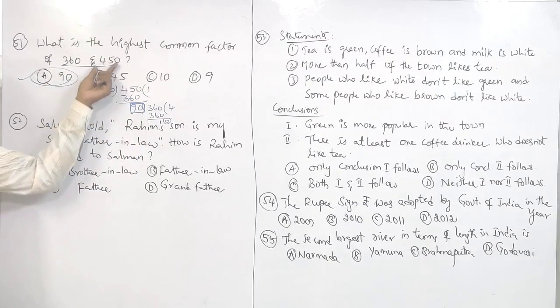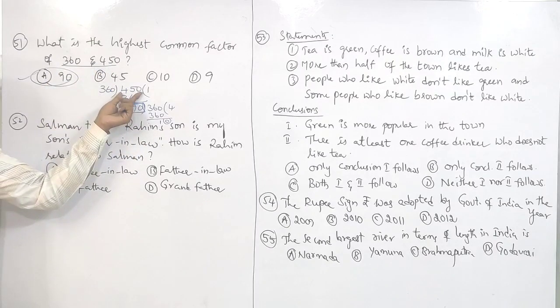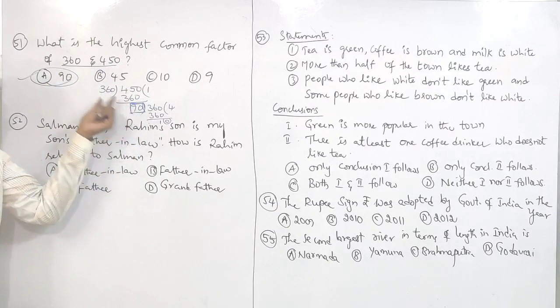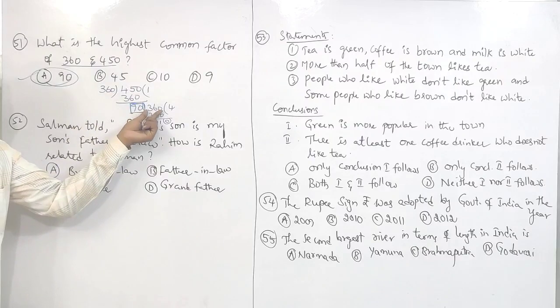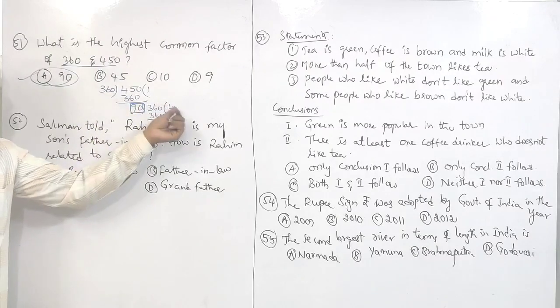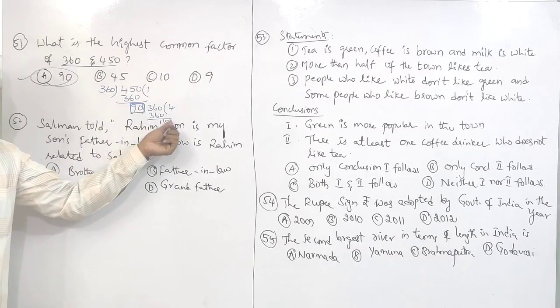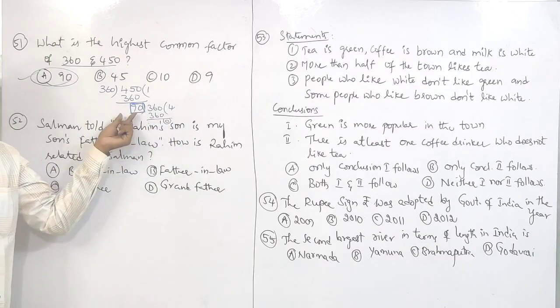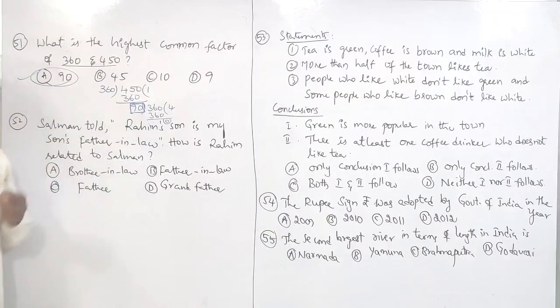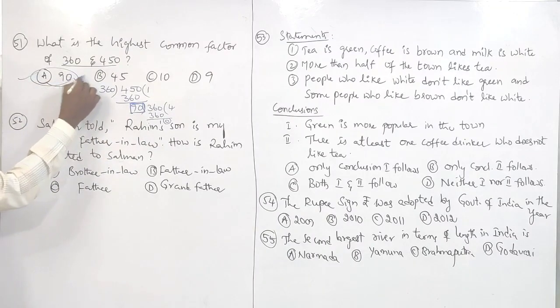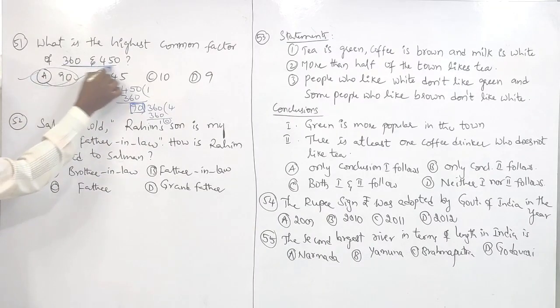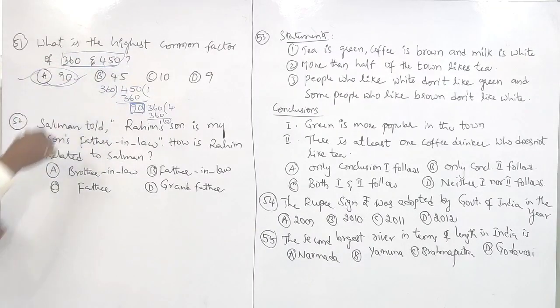Take the smallest number here and the largest here, and divide. Take down 360 here; 91 fours give remainder 0. So the HCF is 90 — the highest number with which these two numbers are divisible.